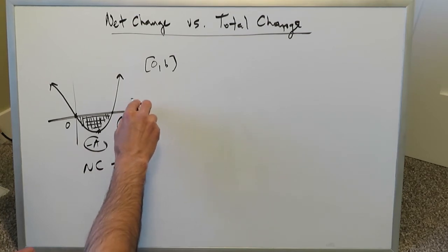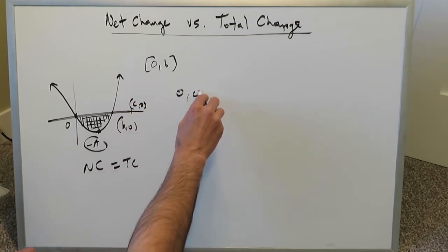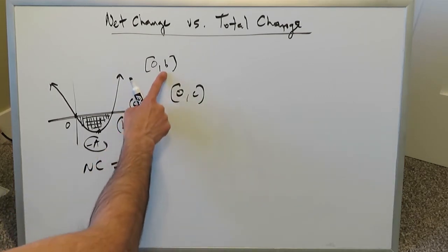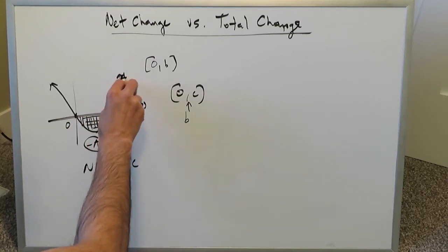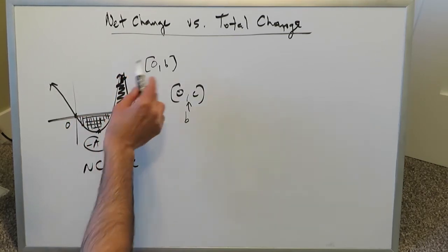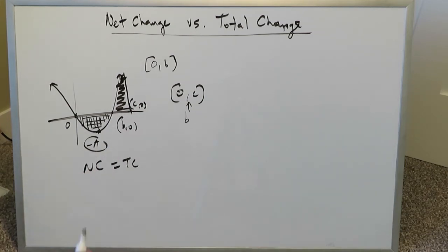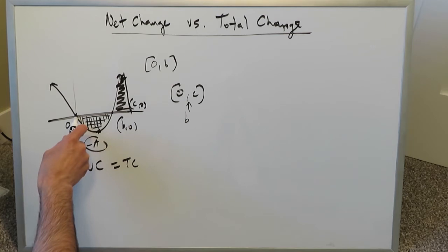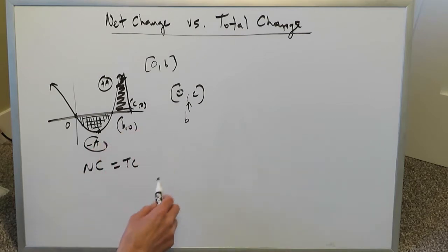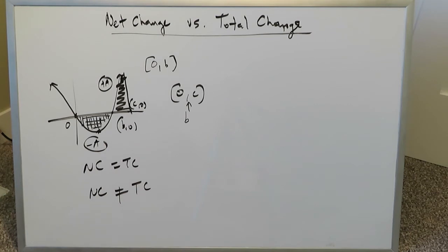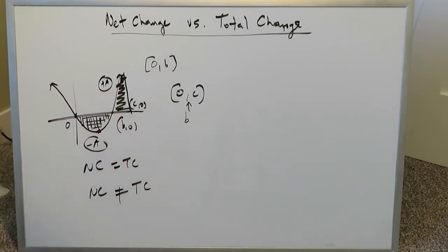If we change the interval and introduce a point c beyond b — so the interval is now zero to c — then b falls somewhere in between. Looking at this interval zero to c on the graph, you now see both a negative area and a positive area. In this instance you clearly have a net change, and it will not be the same as the total change.